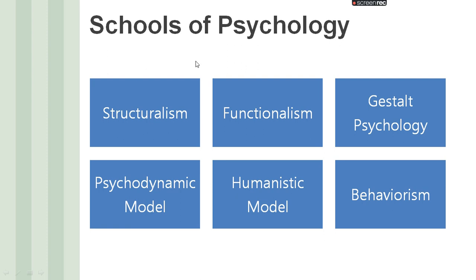We are going to discuss the different schools of psychology. When you say schools, these are a group of experts studying a certain topic. The schools include structuralism, functionalism, gestalt psychology, the psychodynamic model, the humanistic model, and behaviorism.